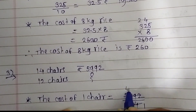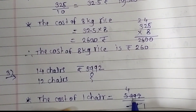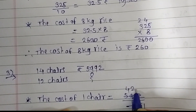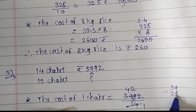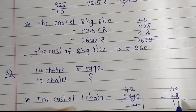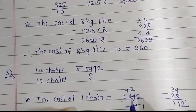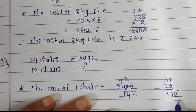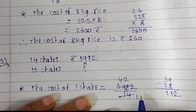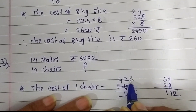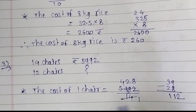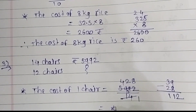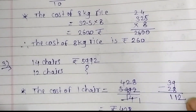Let's divide: 14 fours are 56; 3 remains, giving 39; 14 twos are 28, and 39 minus 28 is 11; bring down to get 112; 14 eights are 112. So the cost of 1 chair is rupees 428. Now let's find the cost of 12 chairs.